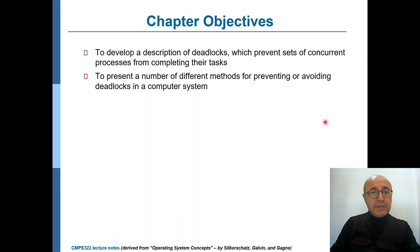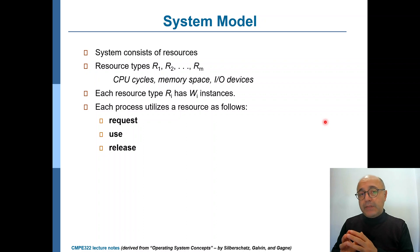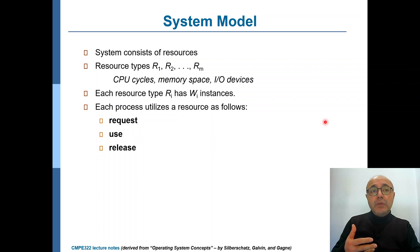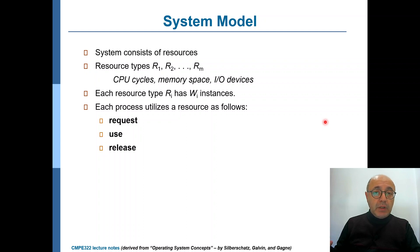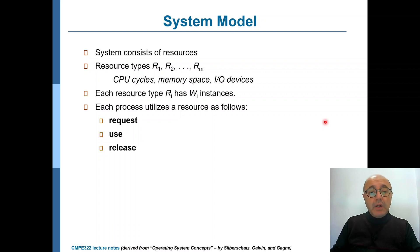For the system model, you need two sets: a set of processes and a set of resources. We define the resources according to their resource types. A resource type could be, for example, memory space, an I/O device like reading from the disk, or soft resources like a data structure — a shared variable, shared array, shared buffer — or a device like a printer or modem.